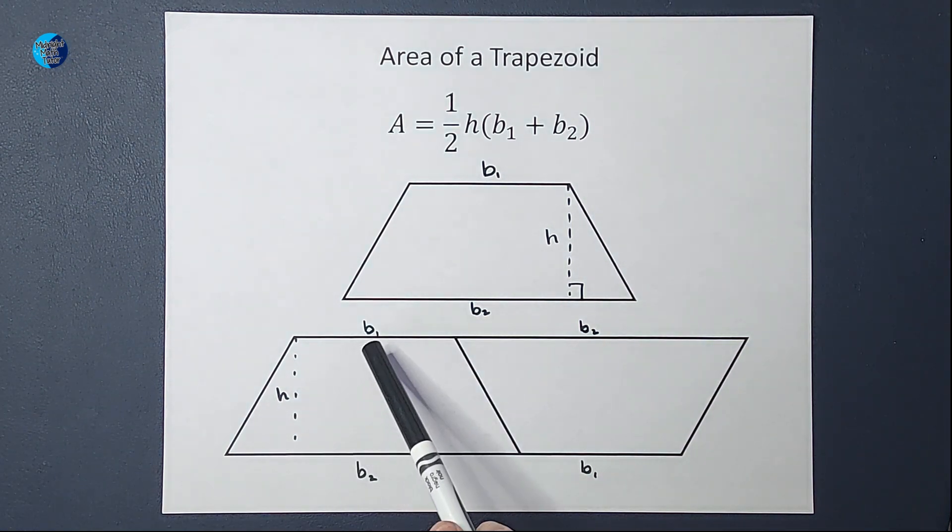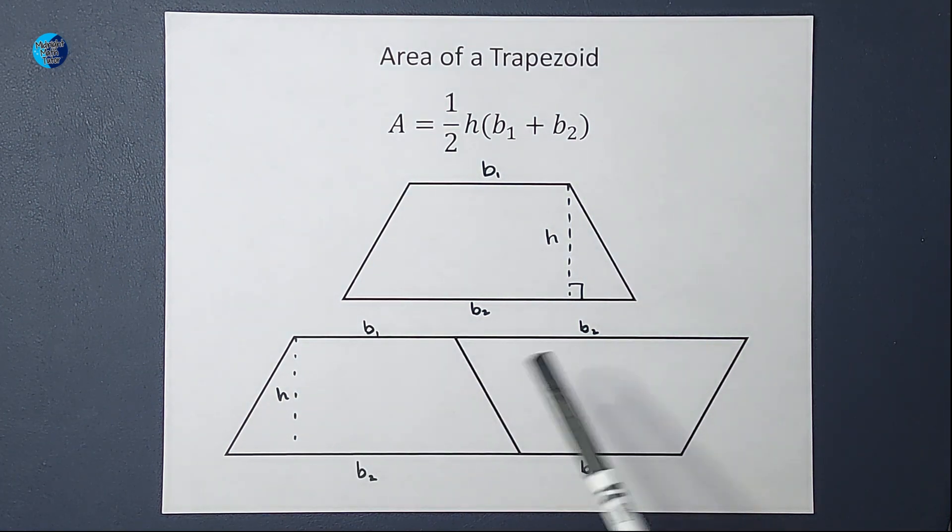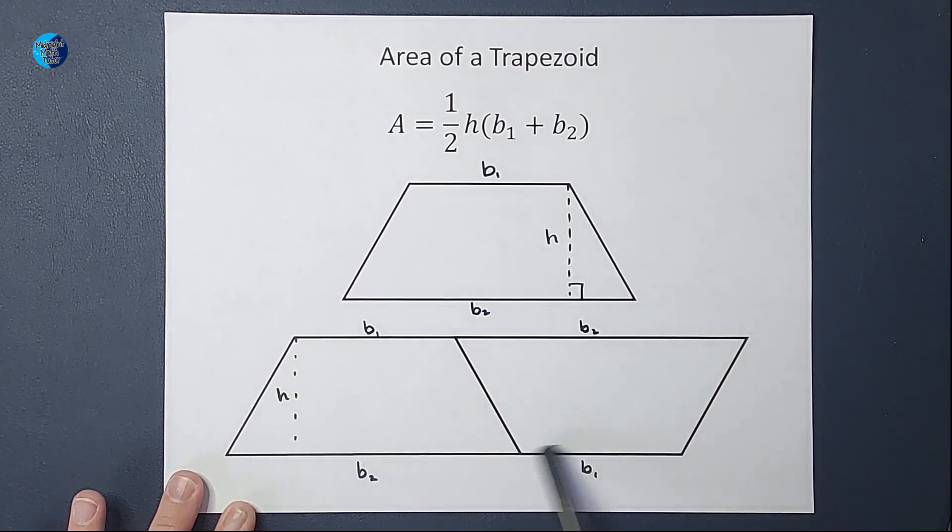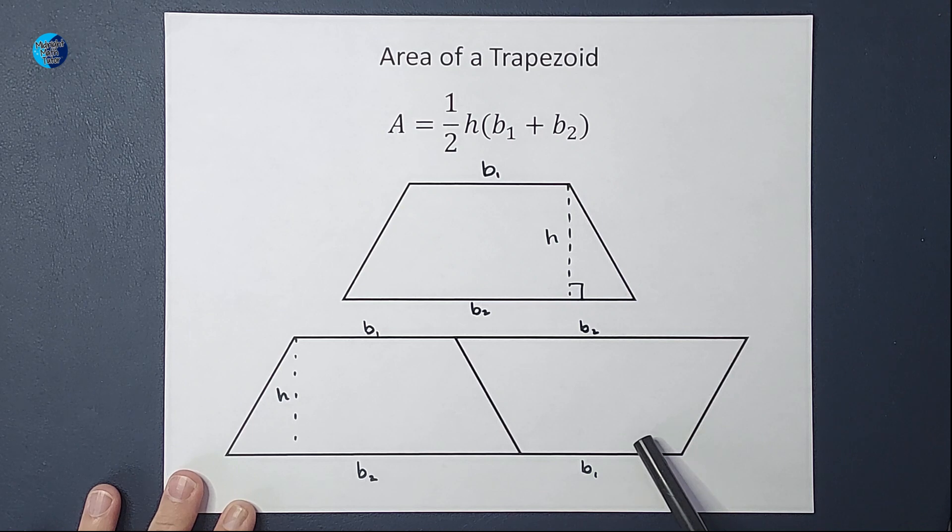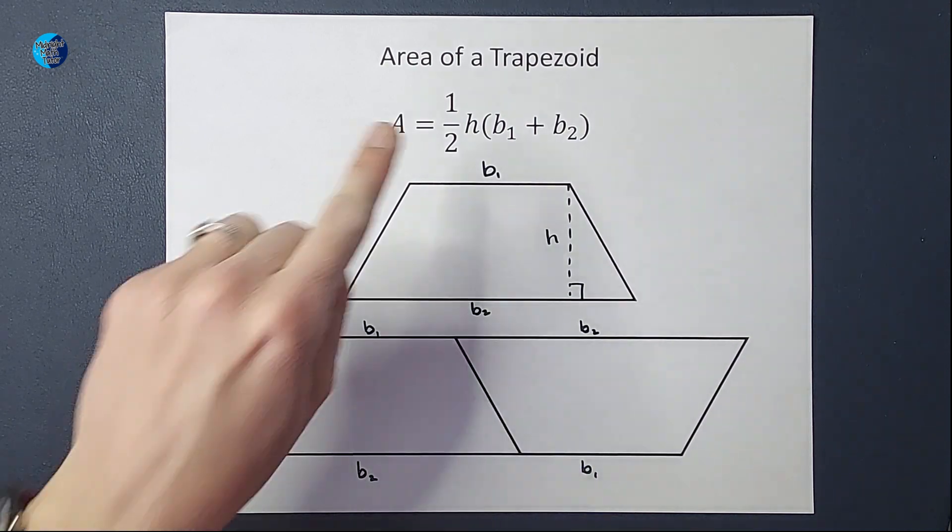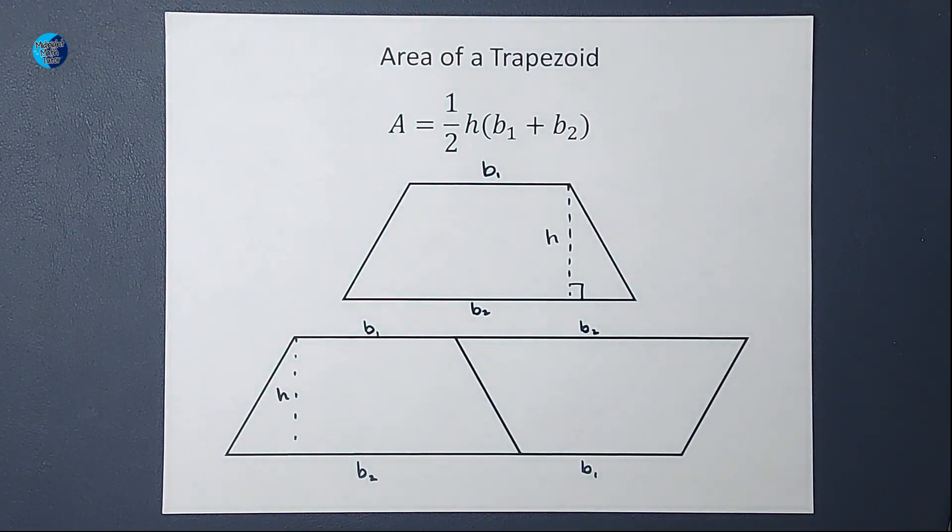Well, guess what happens if I do base one plus base two and multiply it by the height? I'm going to get the area of this whole parallelogram, right? But I don't want the area of the parallelogram. I want the area of the trapezoid, which is exactly half of that parallelogram.